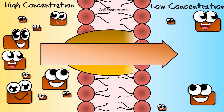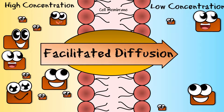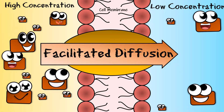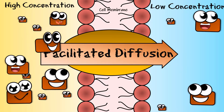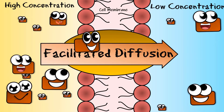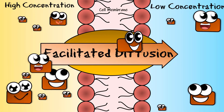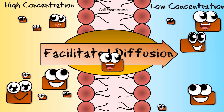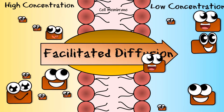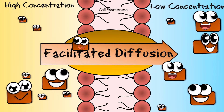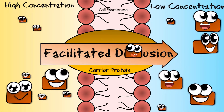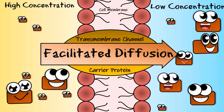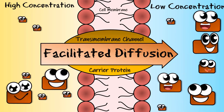Thus, the cell uses a protein to aid diffusion. This type of diffusion is known as facilitated diffusion. The protein can either be a carrier protein or a transmembrane channel.